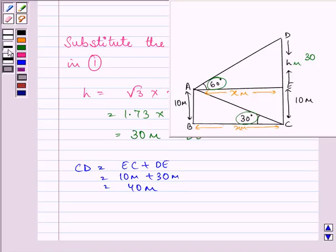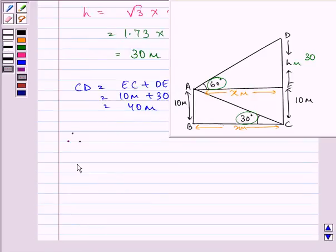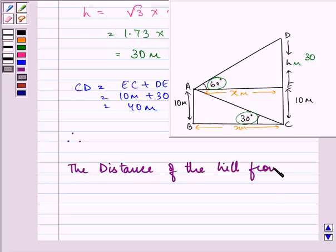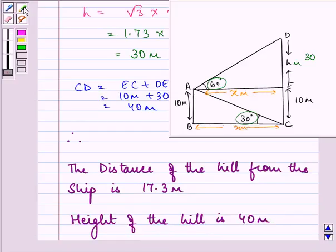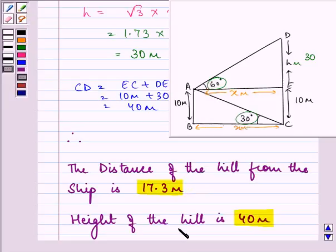Our final answer is: therefore, the distance of the hill from the ship is found out to be 17.3 meters, and the height of the hill is 40 meters. This ends the session I was taking. Hope you have a great time and bye for now.